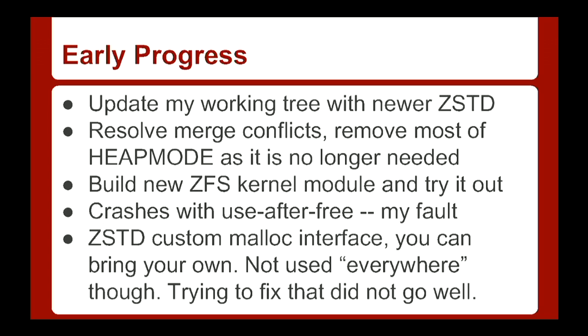I updated my working tree to this newer version of ZStandard, resolved the merge conflicts mostly by chucking all the heap mode stuff out, and built the new ZFS kernel module to try it out. But it was crashing with some use-after-free and other problems. I was pretty new to C and made a rookie mistake with pointer arithmetic — if you take a struct pointer and add one, it adds a whole stride, not just four bytes.